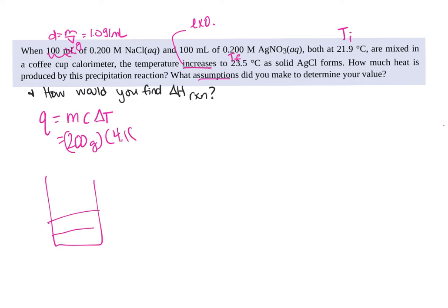Another assumption is that we can use this specific heat, which would be given to you on the test, it's on your green sheet, of water, even though these are solutions. And then we would do our T final minus T initial. I'm not going to throw those numbers in.